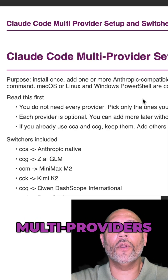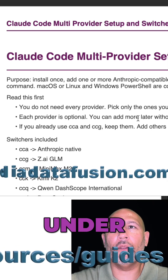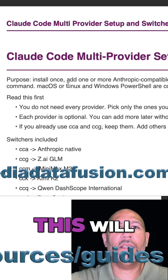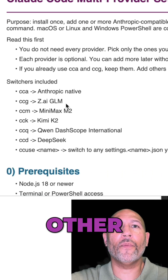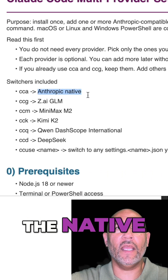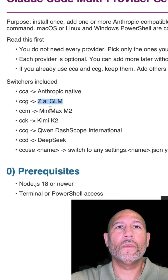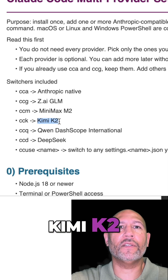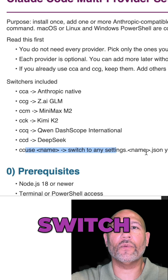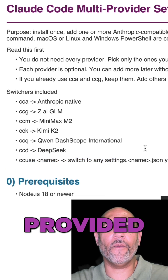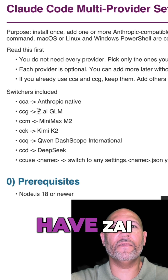So let's get this installed. The Cloud Code multi-provider setup and switcher guide is available at my website mediadafusion.com under Resources > Guides. This will show you how to install MiniMax M2 but also other providers, so you can switch between native Anthropic, GLM, MiniMax, Kimi K2, Qwen, and DeepSeek. There's also an alternate way to switch between models — all of this is covered in the guide.